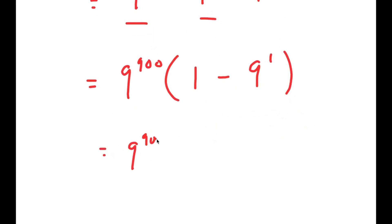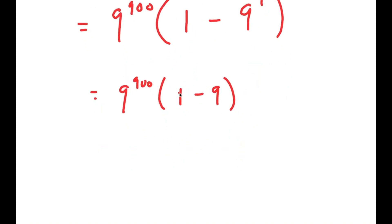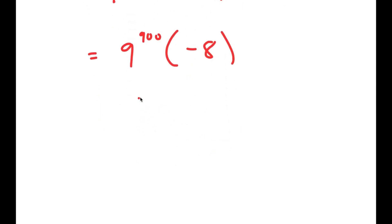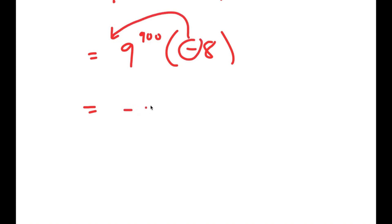This equals 9^900 times (1 minus 9), because 9^1 is the same as 9. Now, 1 minus 9 equals negative 8, so I get 9^900 times negative 8. I said I was going to simplify this as much as possible. We can't get the exact value because 9^900 is such a big number, but we can get the simplified form. I'm going to move the negative sign to the front, so I get negative 9^900 times 8.